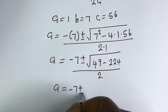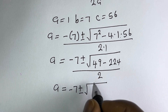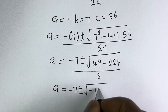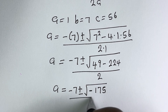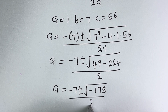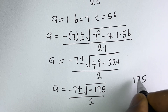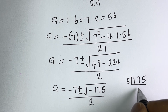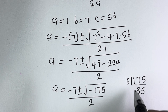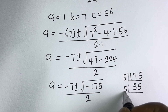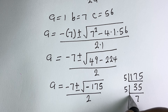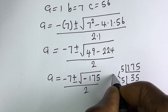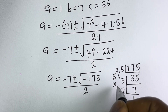So we have A equals minus 7 plus or minus square root of (49 minus 224), which is minus 175, all divided by 2. Note that 175 is divisible by 5: 175 = 25 × 7, which is 5² × 7.